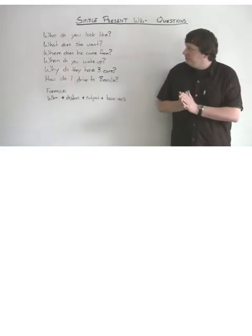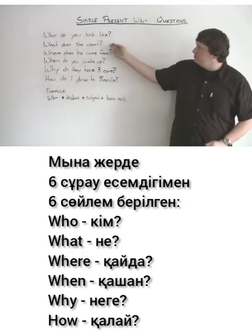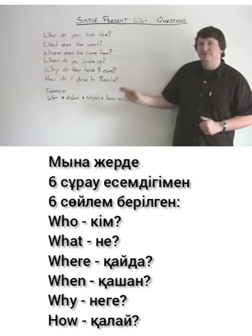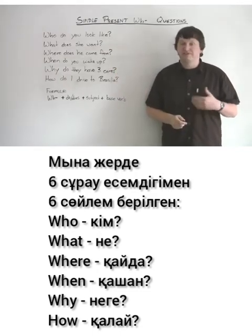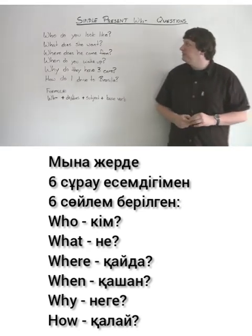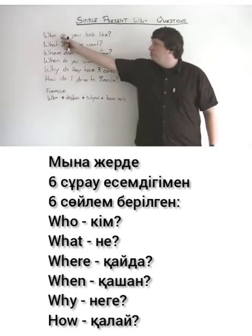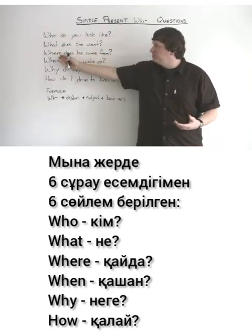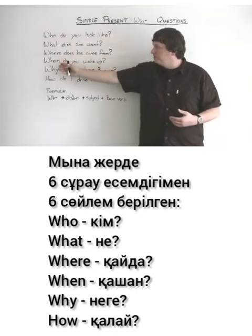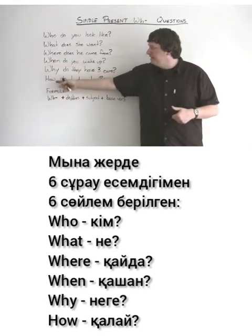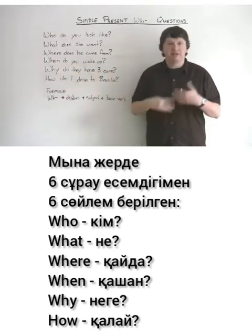Here we have six different questions with six different question words — common question words in English. We have: who for a person, what for more information, where for location, when for time, why for reason, and how for an explanation.